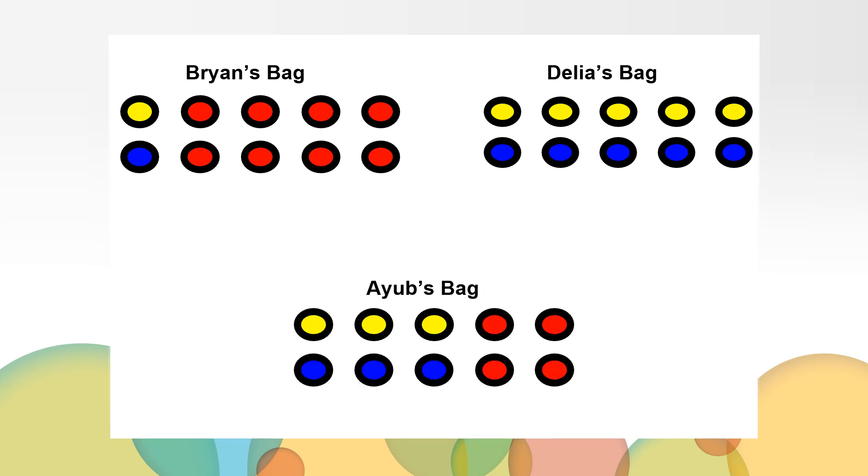Look at Ayub's bag. Did he design a bag where the probability of picking a yellow or a blue marble is equally likely? That's right, he did! Although his bag of marbles looks different than Brian's and Delia's, he designed a bag where there is the same number of blue marbles as yellow marbles. This makes it equally likely that you would pull a yellow or a blue marble from his bag.